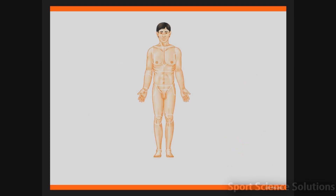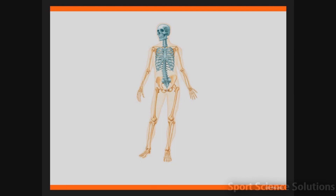A number of different organ systems make up the human body. Today we are going to be focusing on the skeletal system. The skeletal system consists of 206 bones divided into two sections. The first section, represented in green here, is called the axial skeleton which consists of 80 bones. The second section is called the appendicular skeleton and it consists of 126 bones.